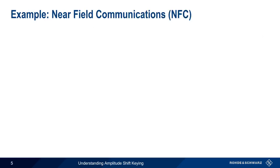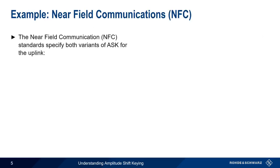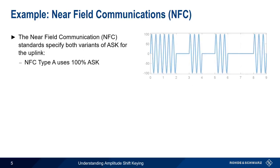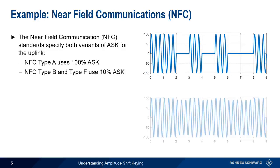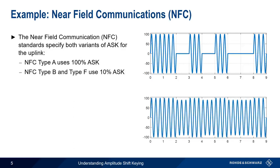One application that uses both types of amplitude shift keying is near-field communications. NFC specifies both variants for use in the uplink. NFC type A uses on-off keying, or so-called 100% ASK, and NFC types B and F use 10% ASK.